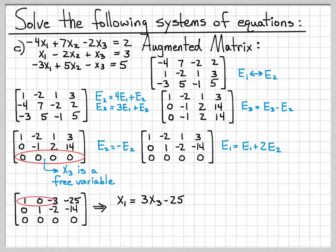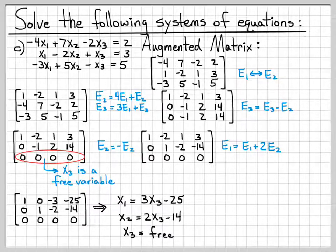That first equation says that x1 is equal to 3x3 minus 25. Really what this says is x1 minus 3x3 is equal to a negative 25, but I've gone ahead and moved the negative 3x3 to the other side by adding 3x3 to both sides.